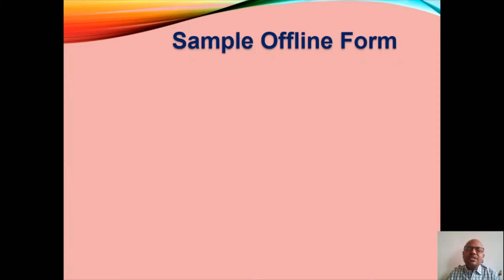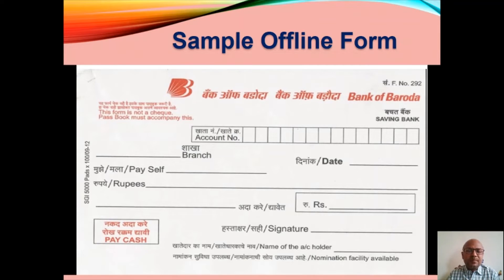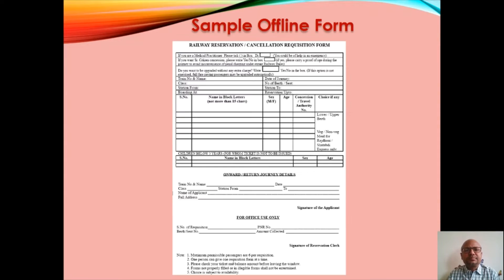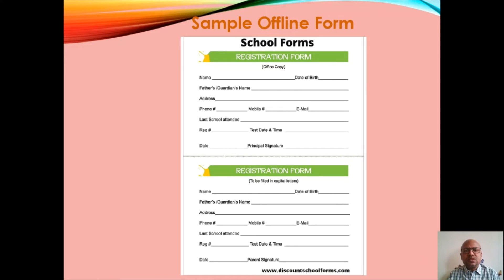Now we shall see a few sample offline forms. For example, this is a withdrawal form of Bank of Baroda. This is also a withdrawal slip of SBI Bank, that is State Bank of India. These all forms are offline forms. This form is a Railway Reservation or Cancellation form. This is a school registration form — you might see these offline forms.